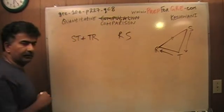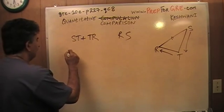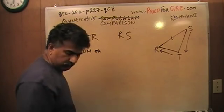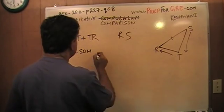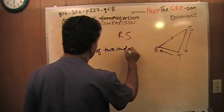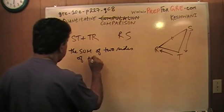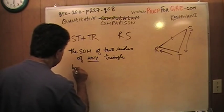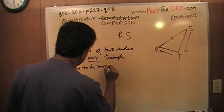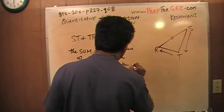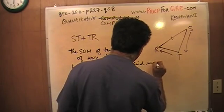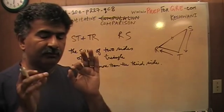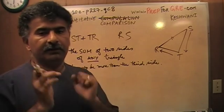The concept that they're testing here is this. I'm going to write it down with a blackboard. The concept being tested here is that the sum of two sides of any triangle has to be more than the third side. The sum of the length of the two sides of any triangle, doesn't have to be any particular shape, has to be more than the third side.